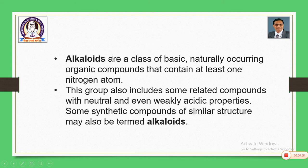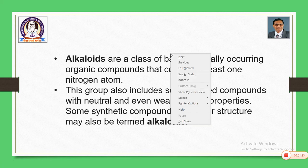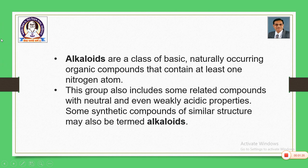The first question: what are alkaloids? Alkaloids are a class of basic, naturally occurring organic compounds that contain at least one nitrogen atom. Alkaloids are naturally occurring and basic in nature, and the basic nature is due to presence of at least one nitrogen atom. This group includes some related compounds with natural and even weakly acidic properties — some exceptional compounds are there. Some synthetic compounds of similar structure are also considered as alkaloids.